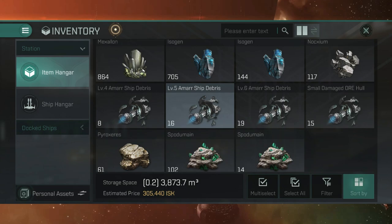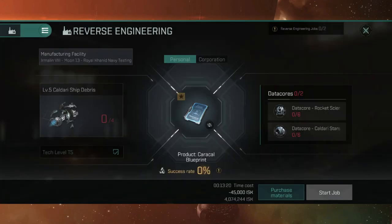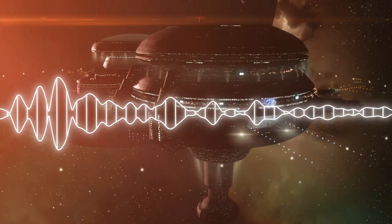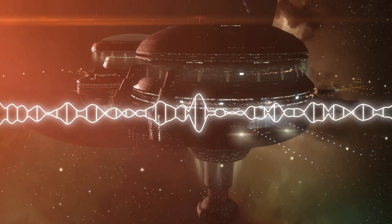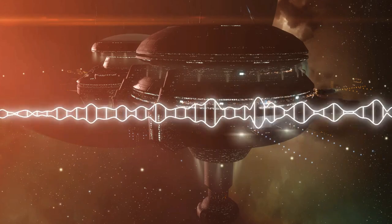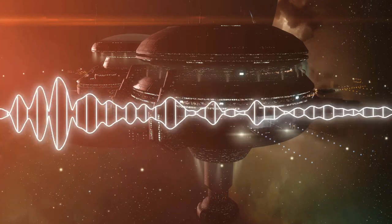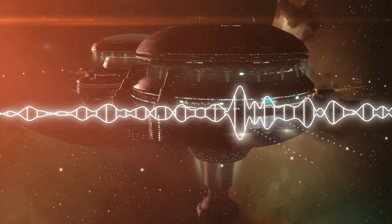Once you have cheesed enough rank 5 wrecks and got enough data cores, you will want to create a Caracal blueprint through reverse engineering - another guide on that soon. And just AFK rat to your heart's content. I say AFK, you still need to manually target the rats as there is no automation for this. You can automatically press a button to grab as many as you can, but there's always more than the amount of targets you can lock.